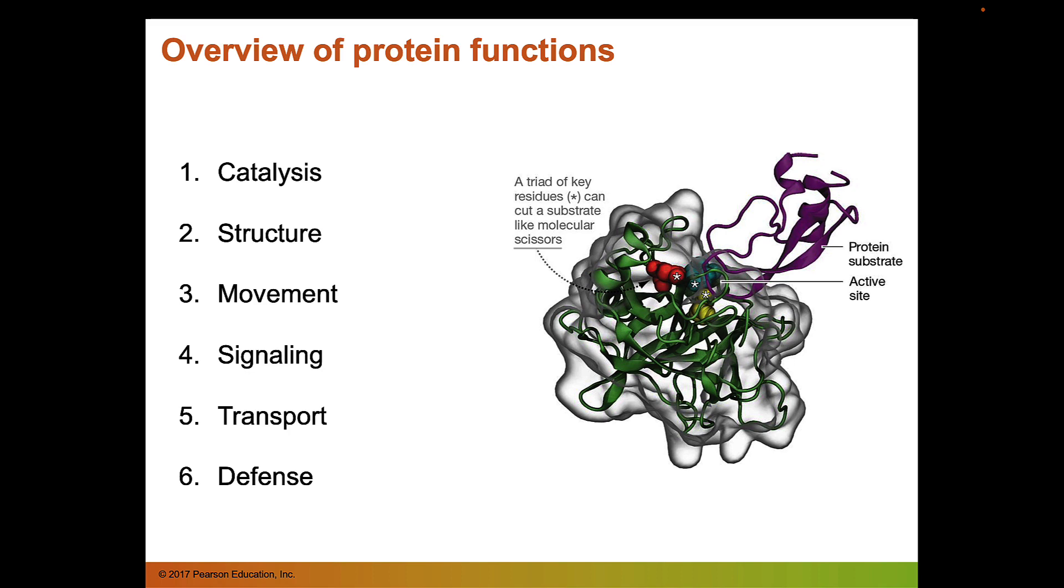We also have proteins that function in transport. So we've already talked about one of these proteins like hemoglobin that can transport oxygen throughout the body. And then the final category of proteins are proteins that function in defense. So something like an antibody that binds to a pathogen and prevents it from causing disease. We have a lot of defense proteins including in addition to antibodies like the complement system.